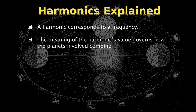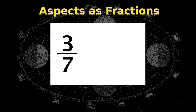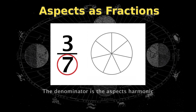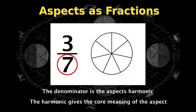The meaning of the harmonic's value describes the frequency and thus governs how the planets involved combine. My subsequent videos will get into each harmonic individually to give you a better idea of how that works. Coming back to aspects — think of it as a fractional value of a whole circle. The denominator is how we divide the circle and is the aspect's harmonic, which gives the core meaning of the aspect.